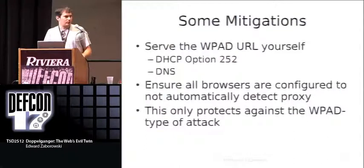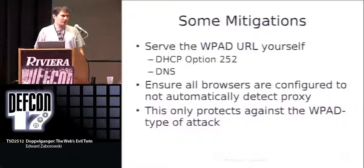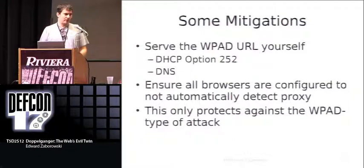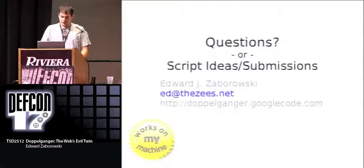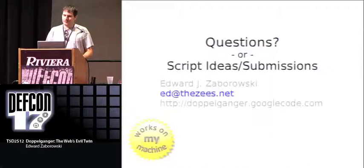There are some things you can do about the WPAD attack. You can serve out the DHCP option 252 yourself, or the DNS option — though browsers look at the DHCP option first, so that would be the better way to go. You could also ensure browsers aren't set to use autoproxy detection. Keep in mind this only protects against the WPAD attack, not ARP spoofing type attacks. The code is hosted at Google at the URL shown below — it has the fine seal of 'works on my machine' approval, so your mileage may vary, but let me know and I'll look to fixing it.